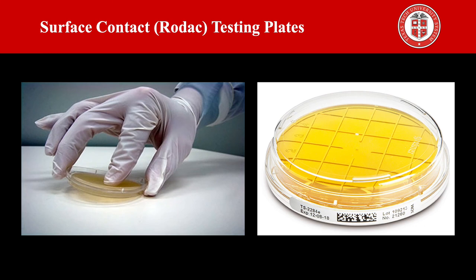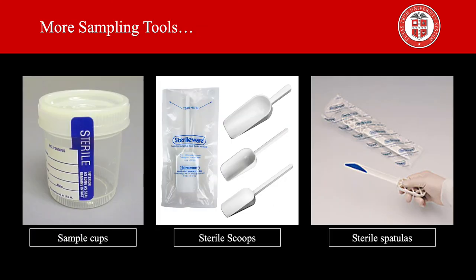Then we have the surface contact testing plates, also known as RODAC plates. These plates can be used on dry surfaces such as floors, walls, textiles, and working garments of personnel in control areas to determine the total aerobic microbial count, yeast and mold count, and total count for specific microorganisms. The RODAC plates are prepared so that the agar surface is convex for sampling flat surfaces. We also have sample cups, sterile scoops, and sterile spatulas that can be used to collect samples in a food processing plant.